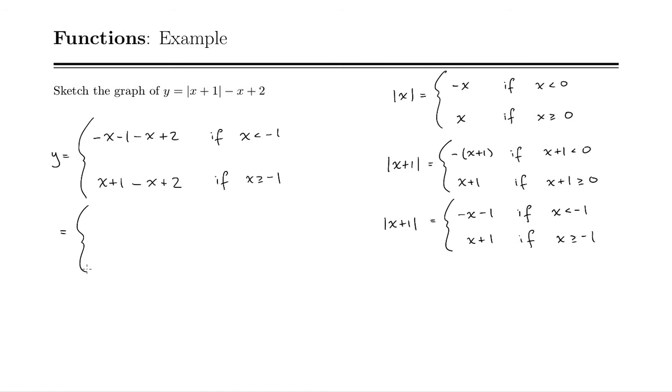Now we can simplify those. Here we've got a negative x minus x, which is negative 2x, and then minus 1 plus 2, which is plus 1. That's if x is less than negative 1. And then here we've got x minus x, those cancel each other out, and then we just have 1 plus 2, which is 3. That's if x is greater than or equal to negative 1.